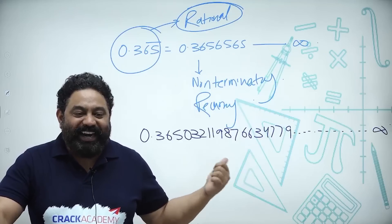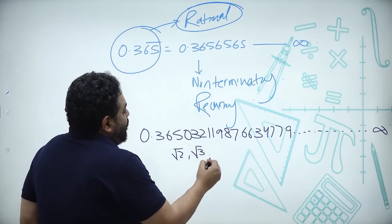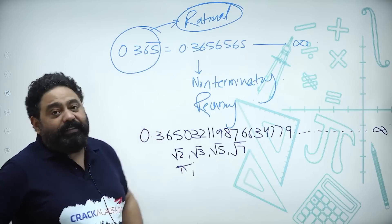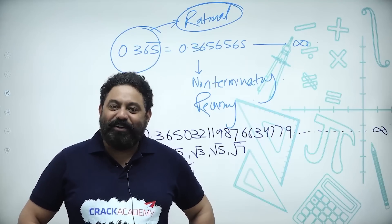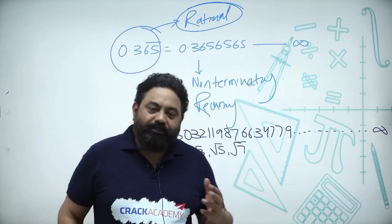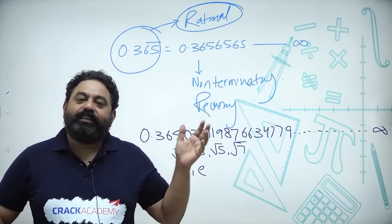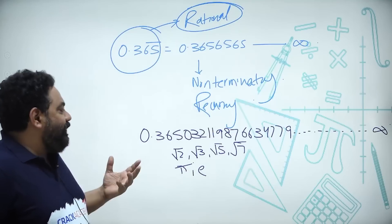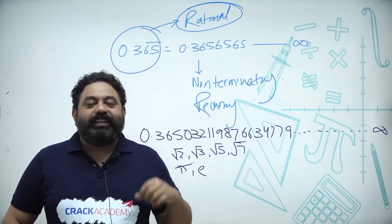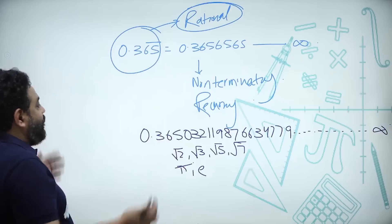Examples of irrational numbers include root of two, root of three, root of five, root of seven. The approximate value of pi is 22 by seven, but that is not its exact value. Similarly, e (the exponential constant, familiar to math students) is also a non-terminating, non-recurring decimal. Any number written in that form that exists on the number line is an irrational number.